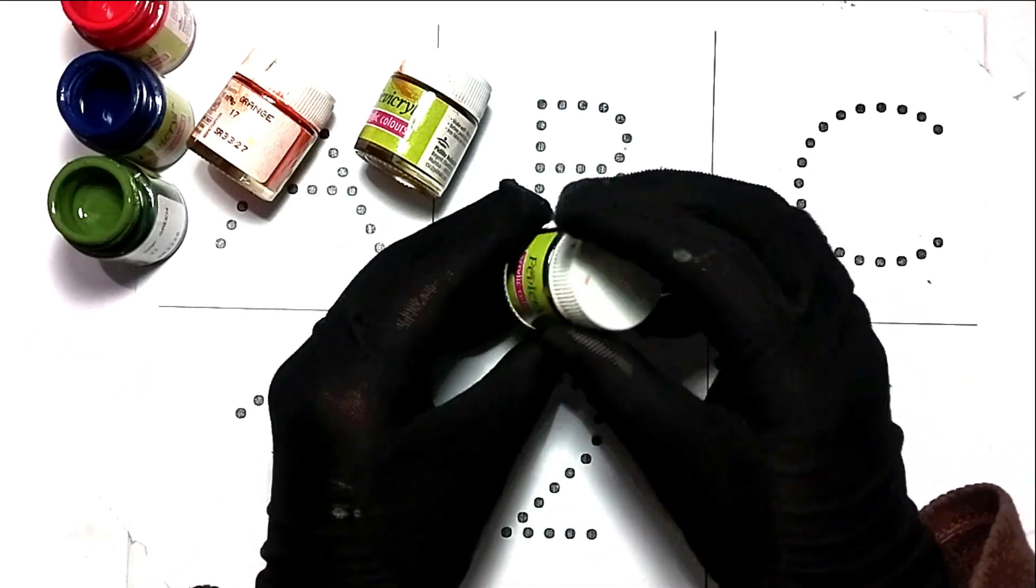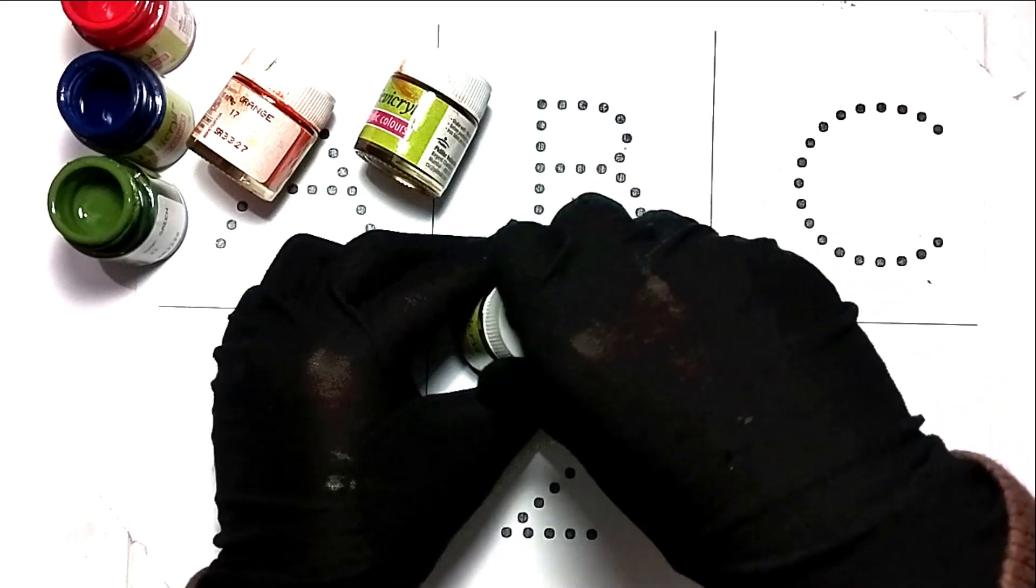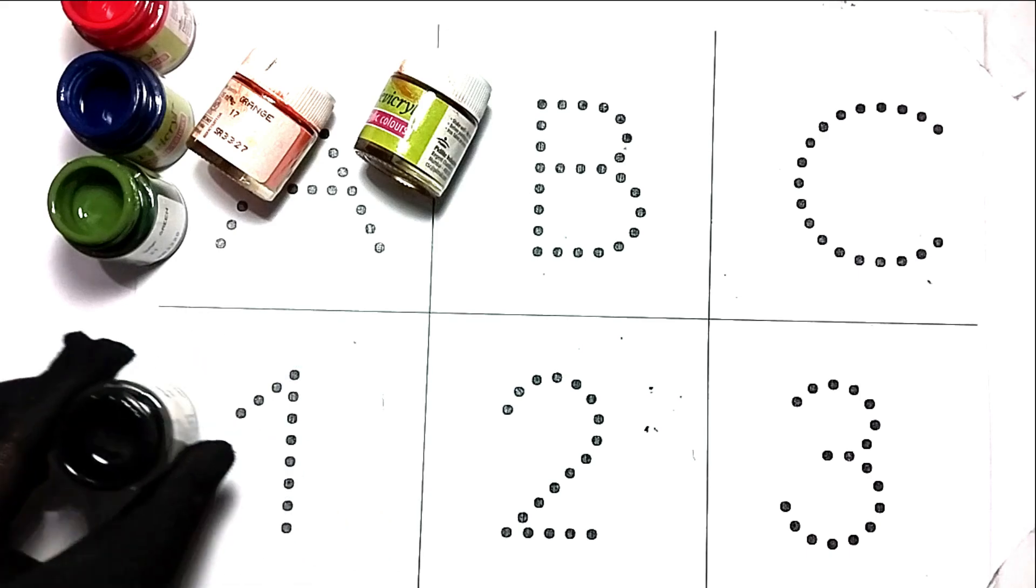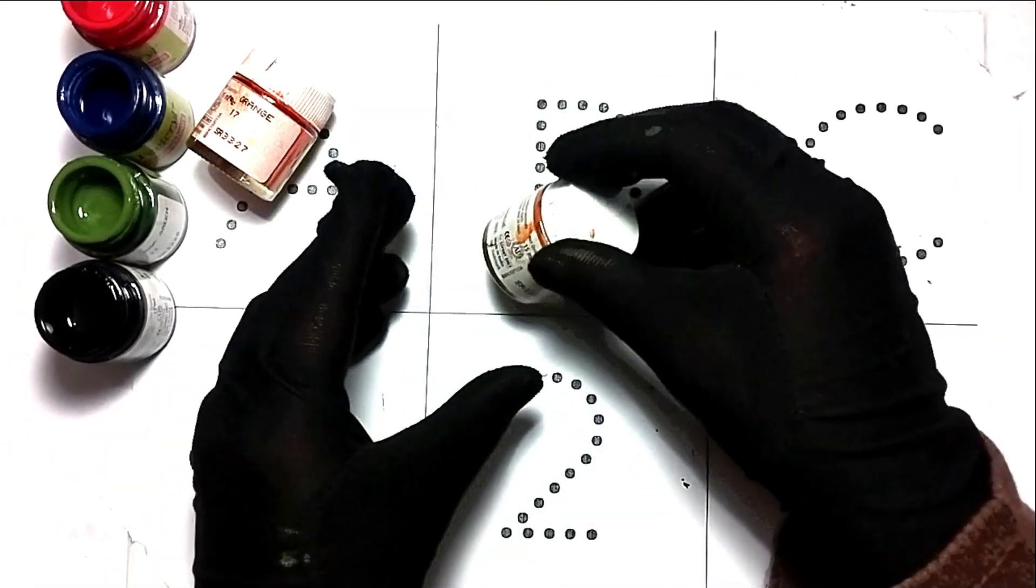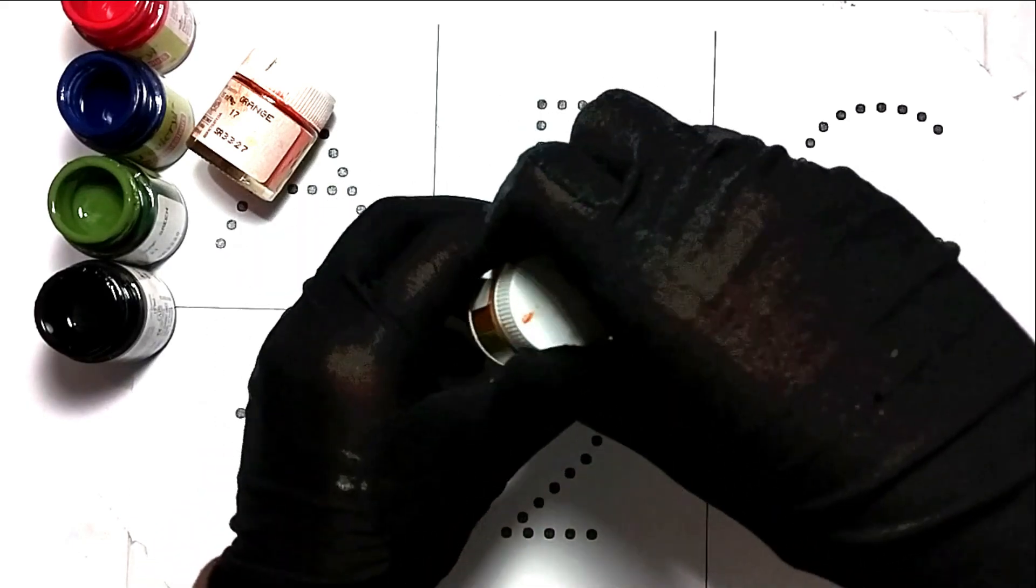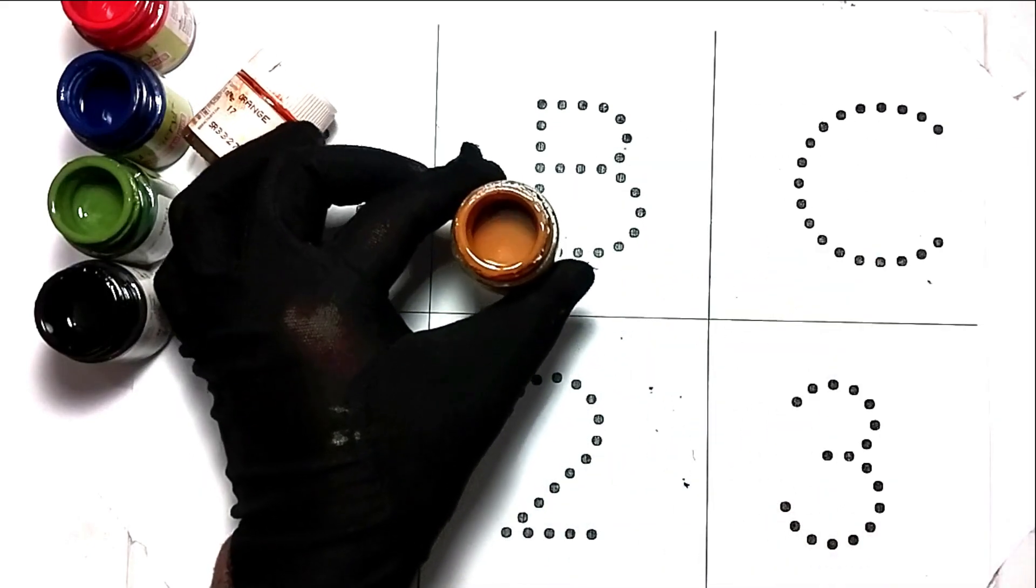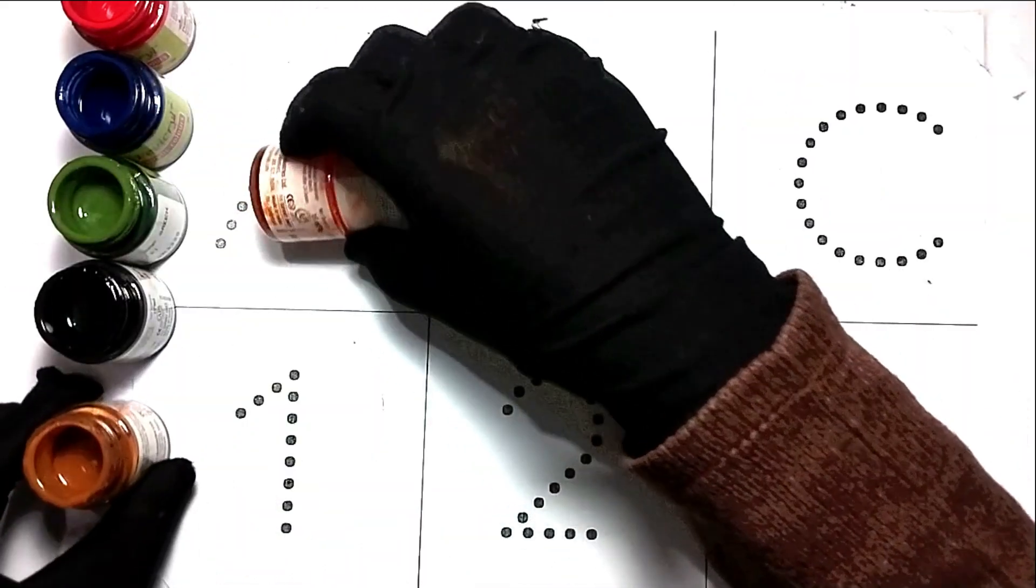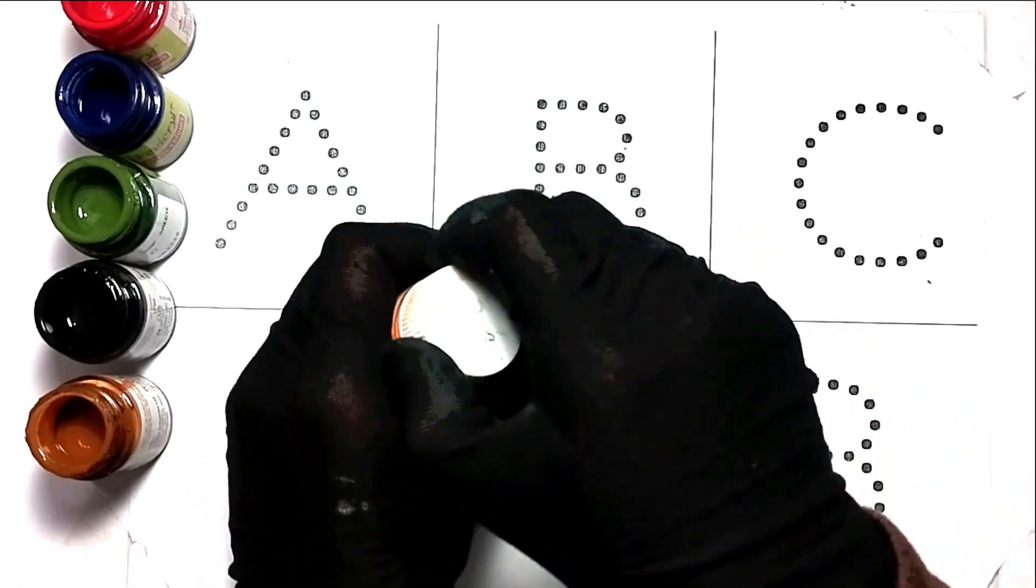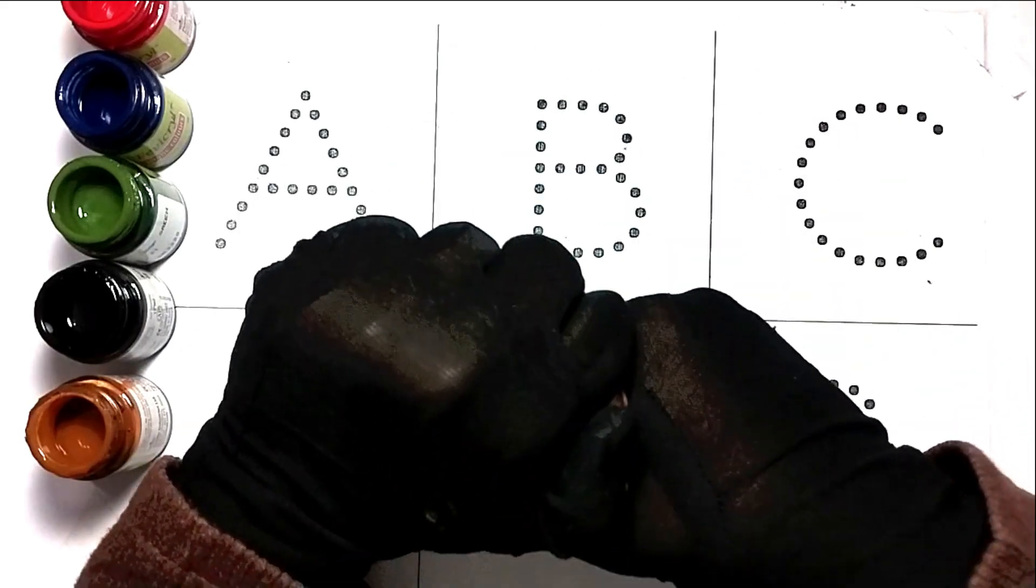This is black color. How is this color? This is black color. This is brown color. How is this color? This is brown color. This is orange color. How is this color? This is orange color.